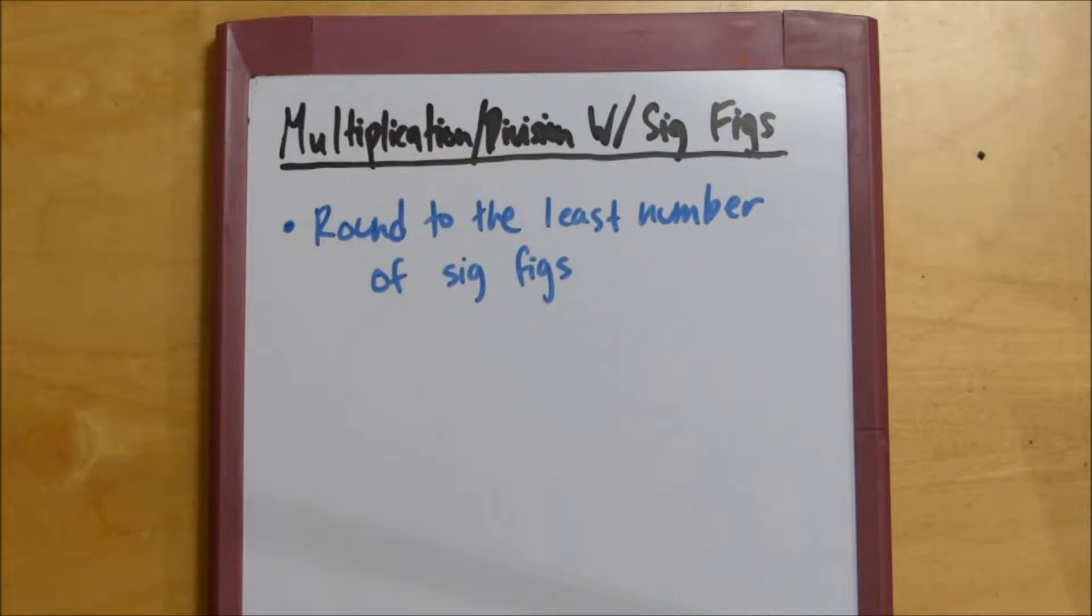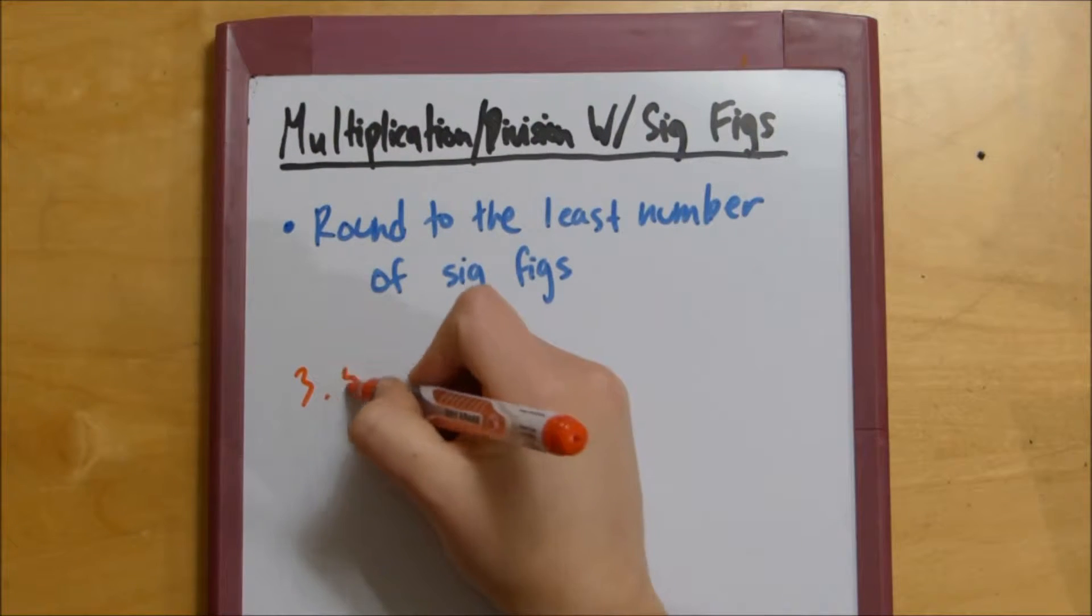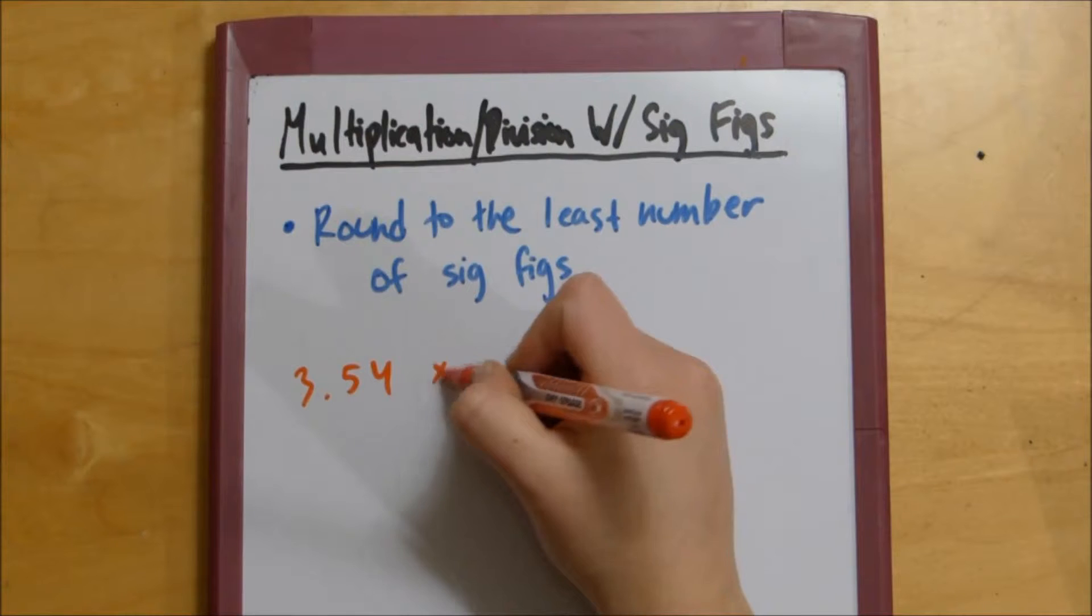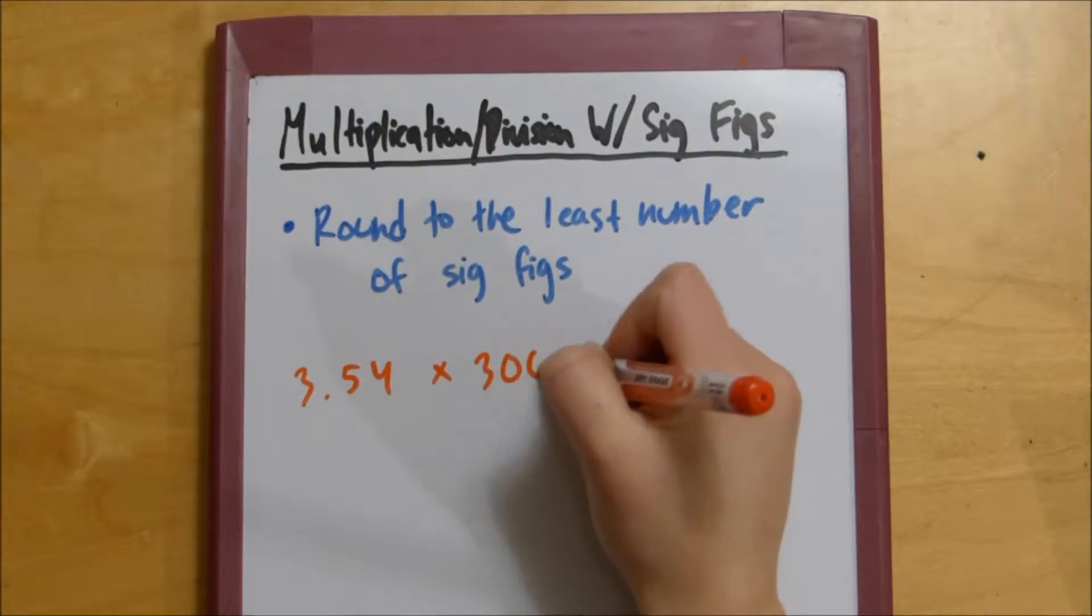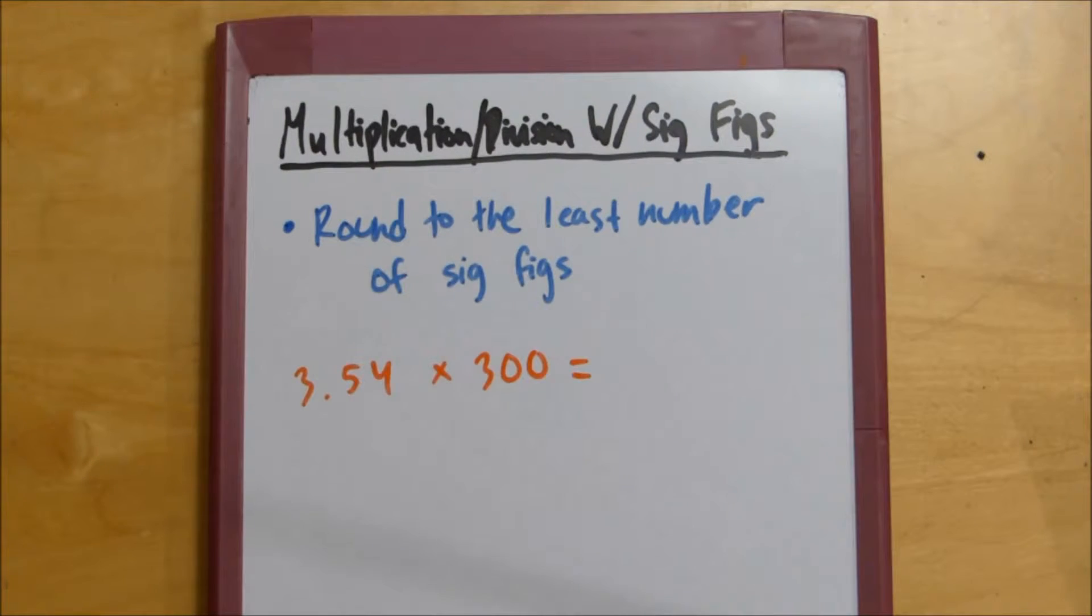So let's say we had something like 3.54 times 300. The first step to multiplication and division, in my opinion,